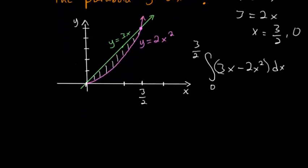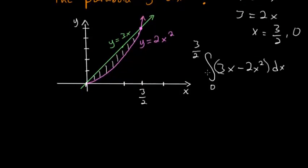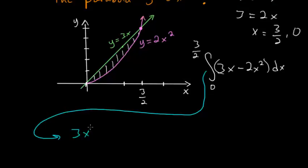So now we can just evaluate this. And the integral of 3x, we just increase the exponent by 1, so it becomes a 2, and we divide by the new exponent. And we subtract the integral of minus 2x squared. So the exponent on x squared increases, it becomes a 3, and we divide by that new exponent.